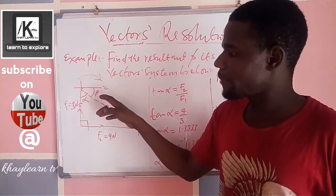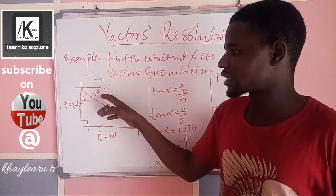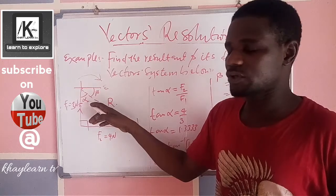Therefore, this angle will be our main direction, or the angle of the direction of the resultant. Now, we don't know this angle, we must find this angle. How are we going to find it?